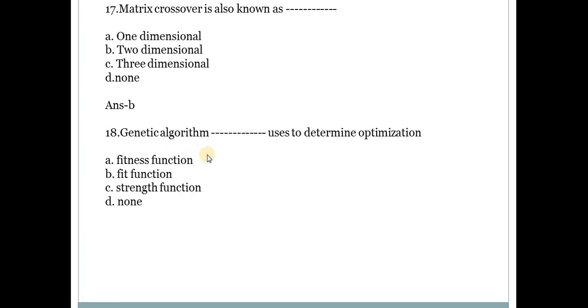Next one. Genetic algorithm dash uses to determine optimization. Answer is A, fitness function. To determine optimization, it uses fitness function.